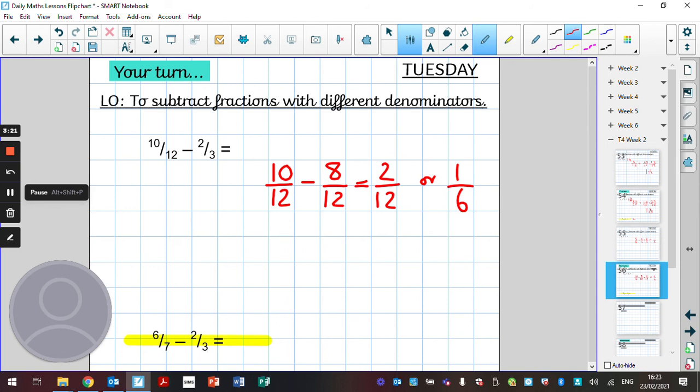Well done if you managed to do that. Excellent work. If not, go back through the video again, see maybe where you made a mistake and have another go. Once you've done that, one of your questions, your arithmetic starter today is six sevenths minus two thirds. So think about having a real good go at that and then move on to the main part of your learning for today. Have a really good session, children, and I will see you tomorrow.